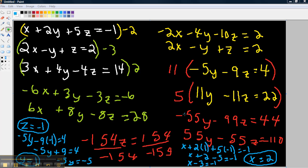Again, add these. Negative 55y plus 55y is 0. Negative 99z plus negative 55z is negative 154z over here in the red. 44 plus 110, that's 154. And here I'm going to divide both sides by negative 154. So my z is equal to negative 1.